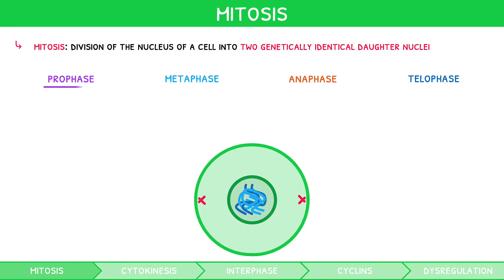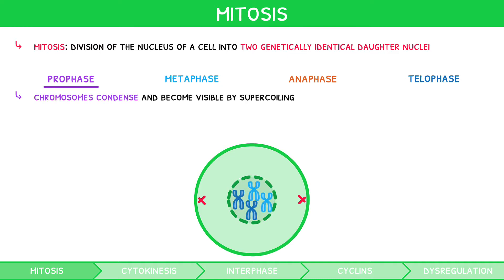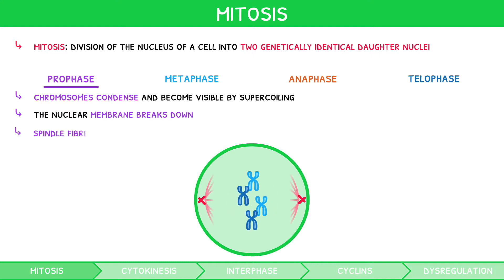During prophase, chromosomes condense and become visible by supercoiling. The nuclear membrane breaks down. Spindle fibres, which are like string, grow from centrioles, which are structures found at the poles of the cell.